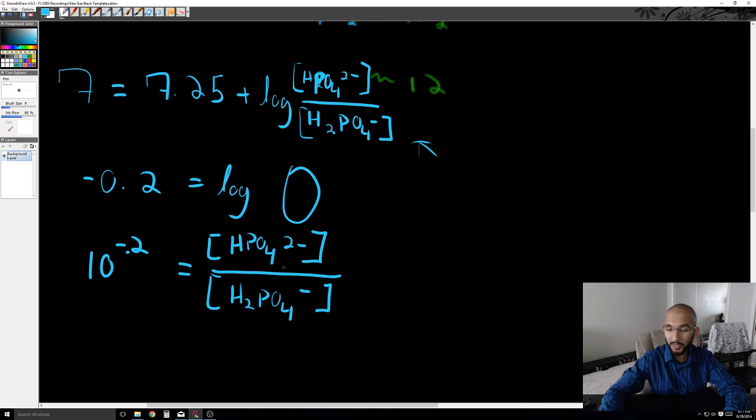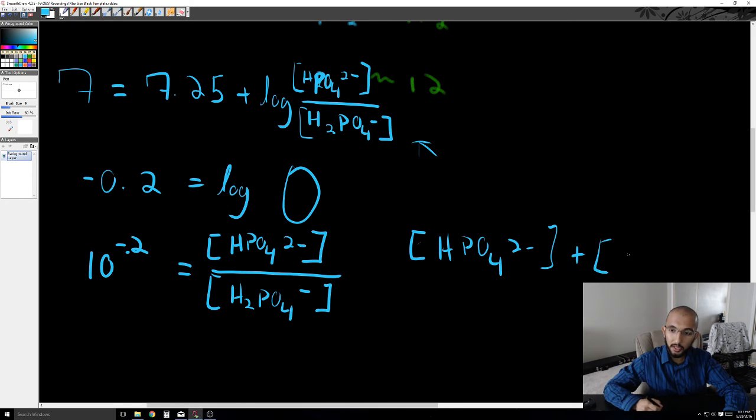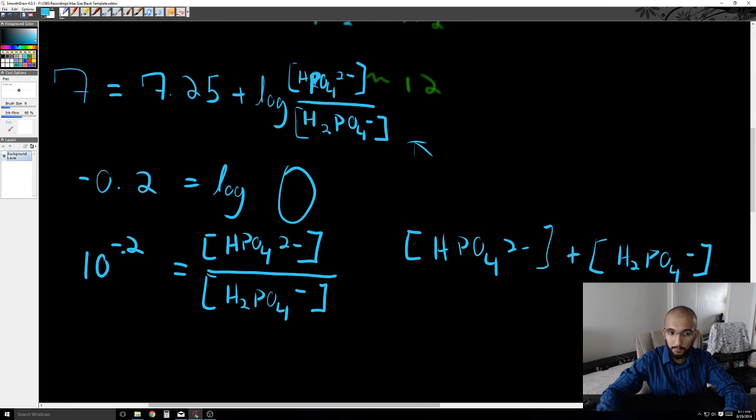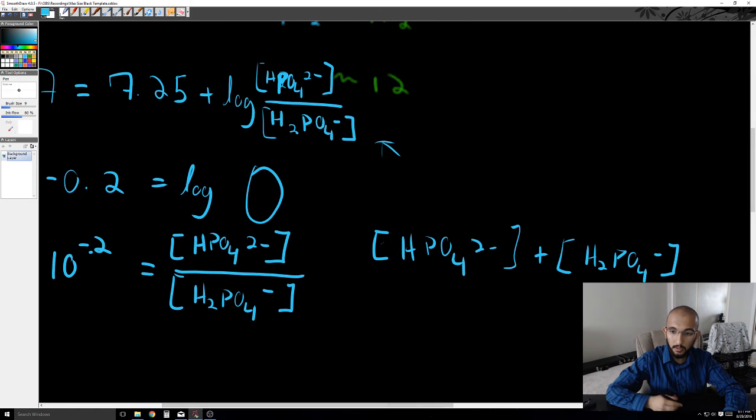It cannot exceed that, and since we didn't lose anything, it's not going to be less than that either. So what we can write is that the concentration of HPO4- plus the concentration of H2PO4- is equal to 50 millimolar, or 50 times 10 to the negative 3 molar, and then we can set this up so that everything is in terms of H2PO4-.